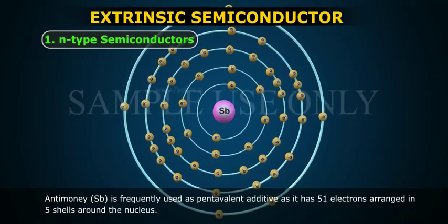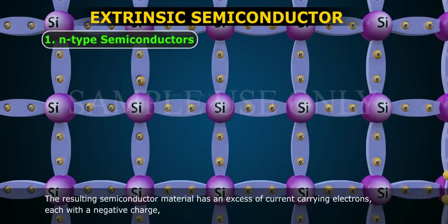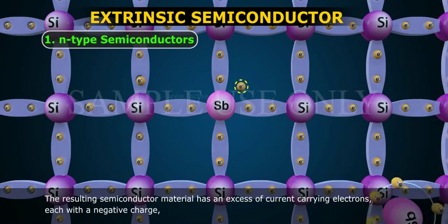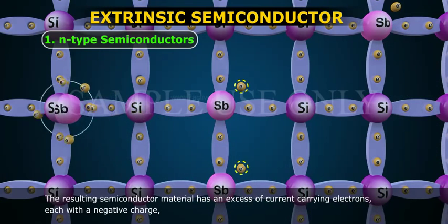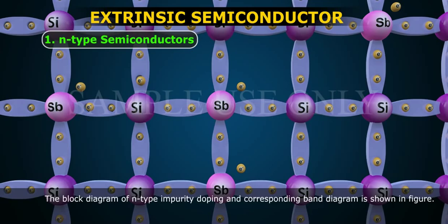Antimony, Sb, is frequently used as pentavalent additive, as it has 51 electrons arranged in five shells around the nucleus. The resulting semiconductor material has an excess of current carrying electrons, each with a negative charge, and is therefore referred to as N-type material with the electrons called majority carriers, and the resultant holes minority carriers. The block diagram of N-type impurity doping and corresponding band diagram is shown in figure 1.